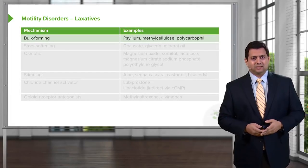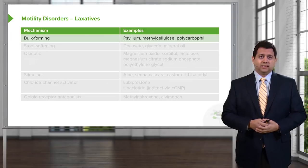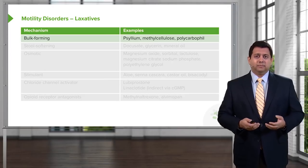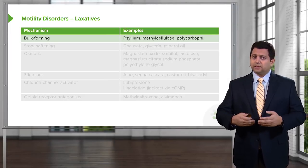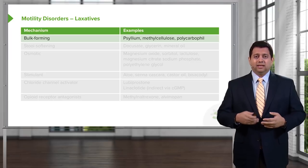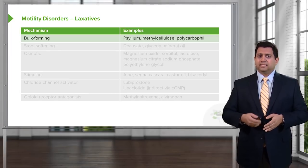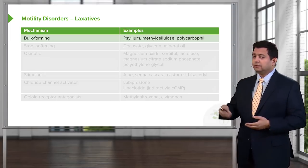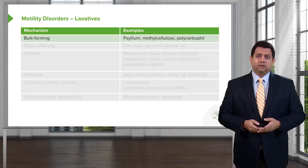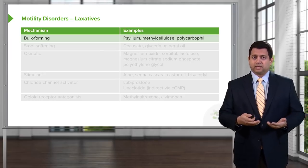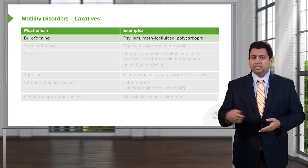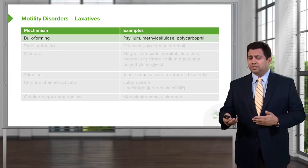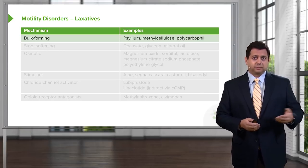Let's take a look at the laxatives. Laxatives can work in several different ways. They can be bulk-forming — the classic example is psyllium. Psyllium is a seed that must be chewed and masticated, meaning chewed and mixed with saliva, because salivary amylase will mix with the psyllium and activate it. There are over-the-counter agents that are ground-up psyllium, available as an orange powder you can mix with food or juice. Over-the-counter agents such as Metamucil contain psyllium that has already been activated.